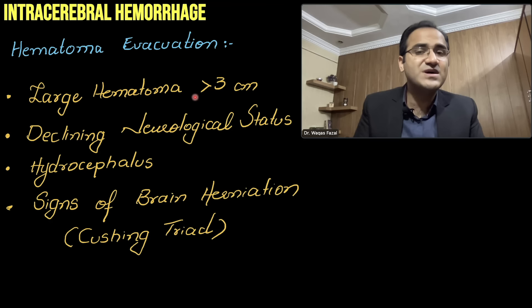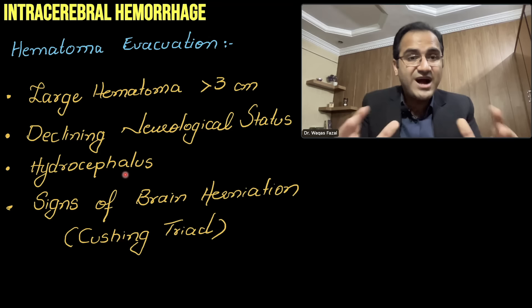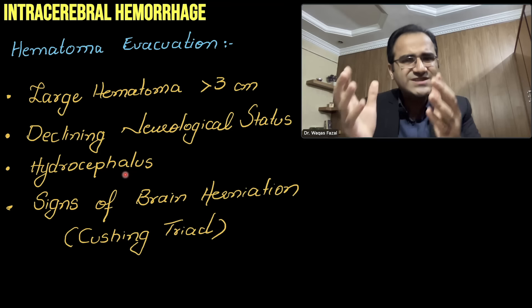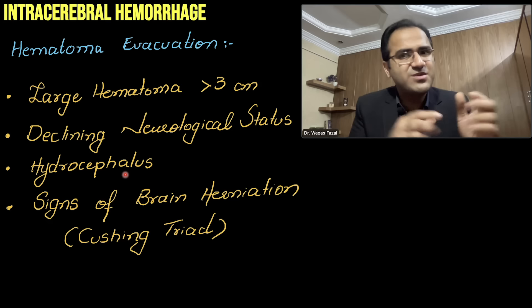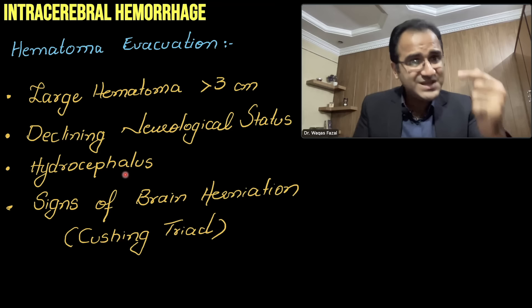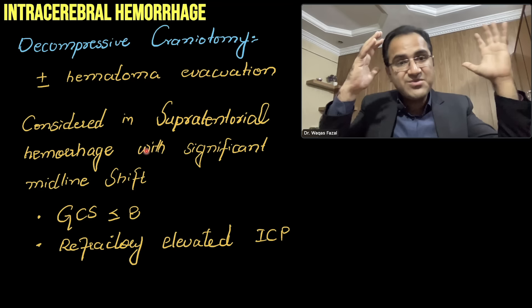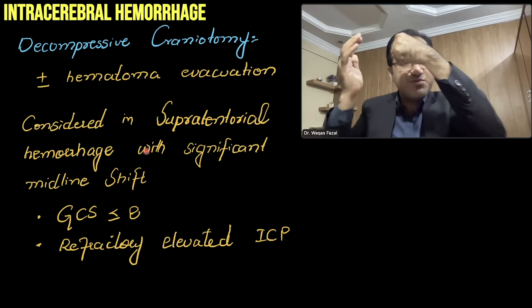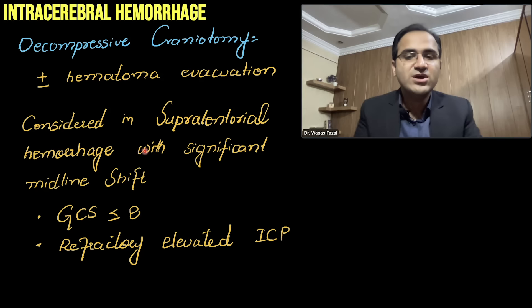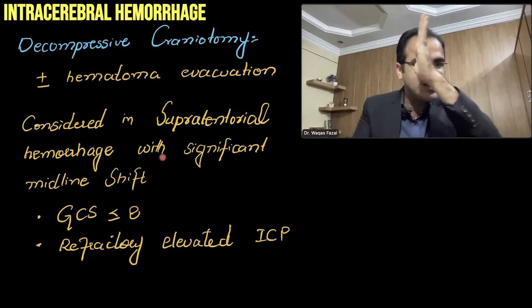Indications for hematoma evacuation include a hematoma larger than 3 cm, declining neurological status, and hydrocephalus due to blockage of CSF drainage pathways by clots. Neurosurgery will guide this decision. Decompressive craniotomy is considered for signs of brain herniation (Cushing's triad), significant supratentorial midline shift, or GCS less than or equal to 8 with refractory elevated intracranial pressure.